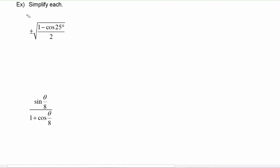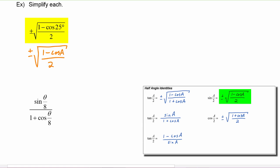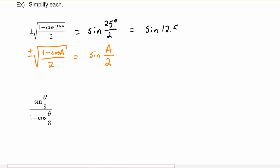In this next example we have to simplify each expression. My suggestion is to look at your list of identities and write the piece of the identity that most looks like the expression you have. In this case, this looks most like plus or minus the square root of one minus cosine a over two, which equals sine of a over two. So this expression equals sine of 25 degrees over two, which simplifies to sine of 12.5 degrees.